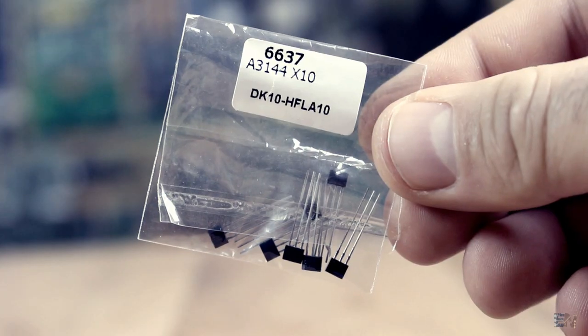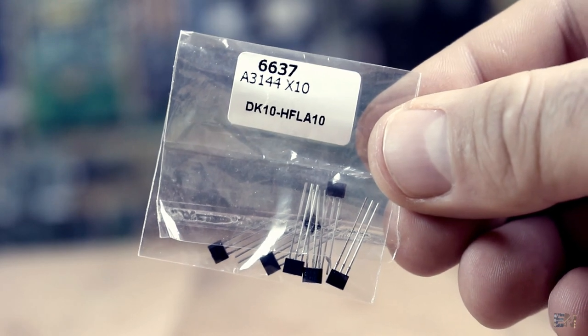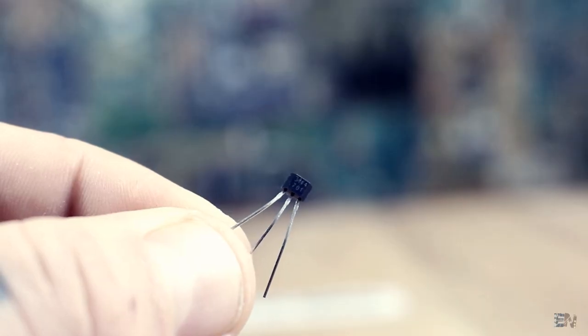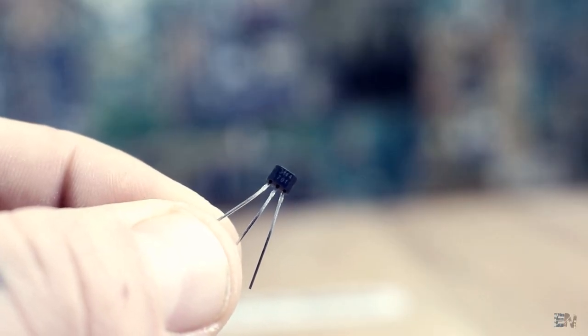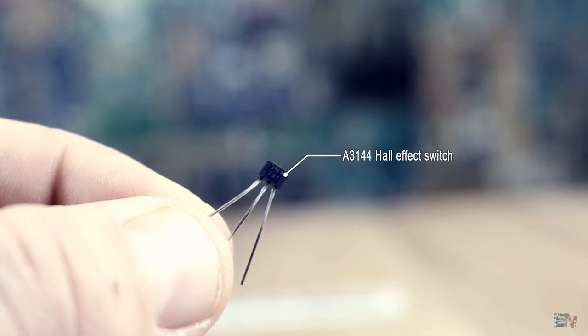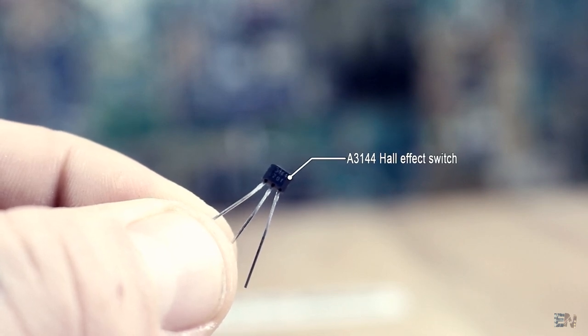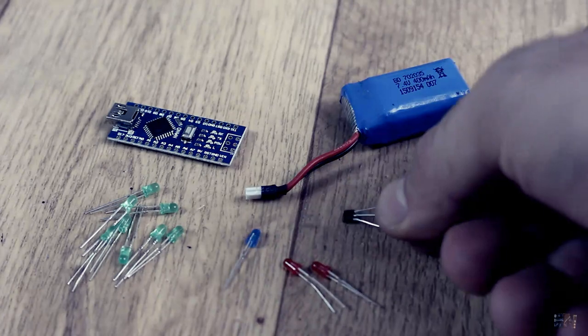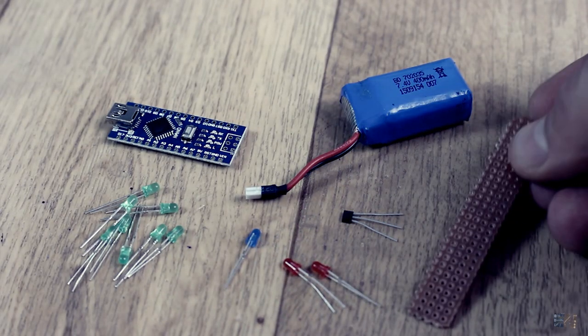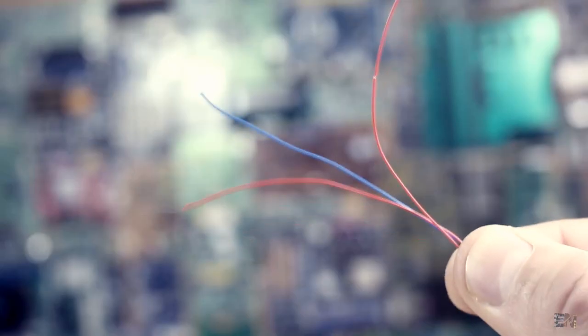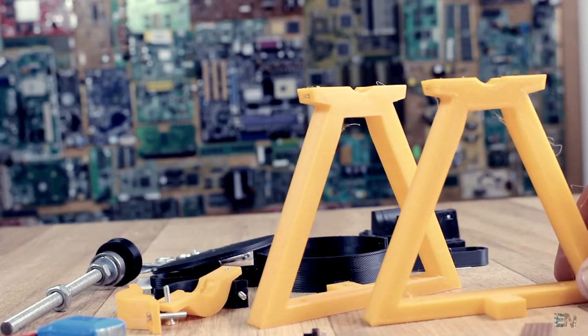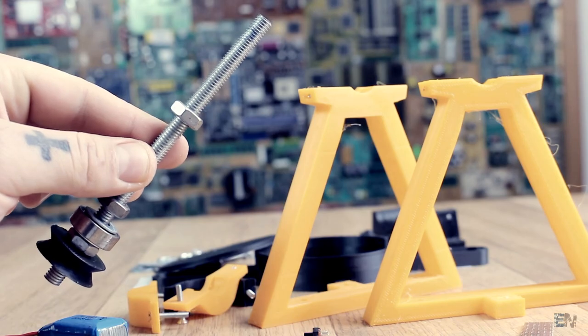We will also need a Hall sensor switch. I've used the A3144 Hall sensor. Make sure you use a Hall sensor switch, not a linear sensor that will give you a linear output depending on the magnetic field. Finally, we will need some drilled PCB, a sliding switch, wires and a 3D printed case that I've designed together with some 8mm screws, nuts and bearings.